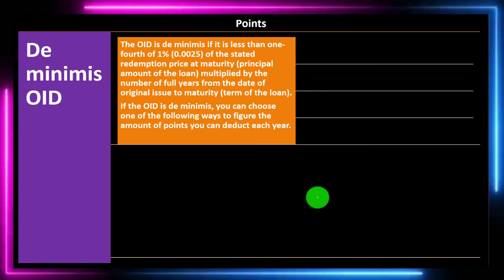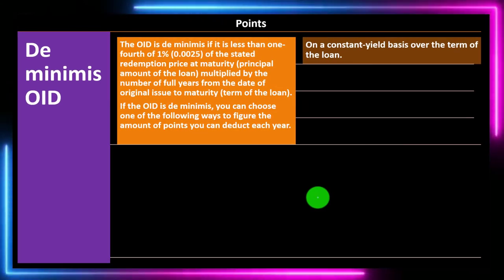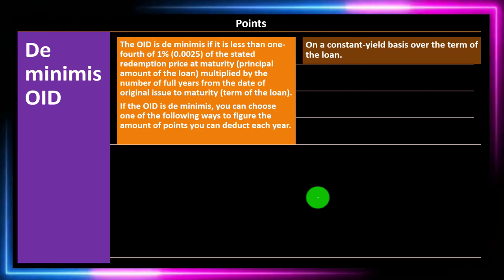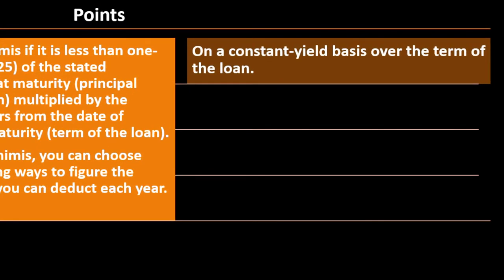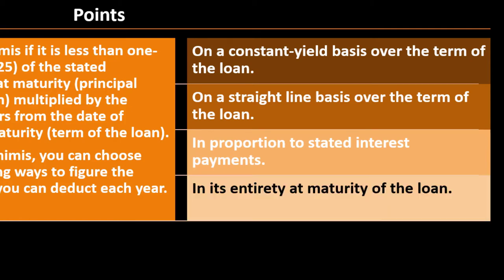De minimis OID: the OID is de minimis if it is less than one-fourth of 1% (0.0025) of the stated redemption price at maturity — the principal amount of the loan — multiplied by the number of full years from the date of original issue to maturity, the term of the loan. If the OID is de minimis, you can choose one of the following ways to figure deductible points each year: on a constant yield basis, on a straight-line basis over the term of the loan, in proportion to the stated interest payments, or in its entirety at the maturity of the loan.